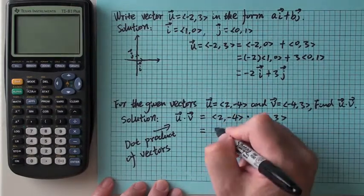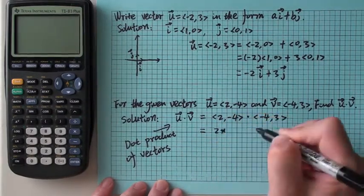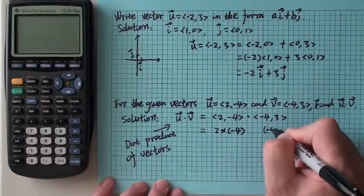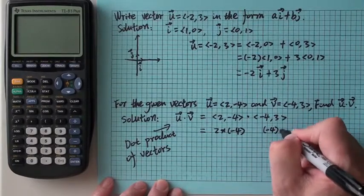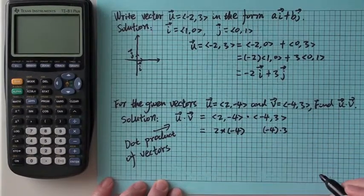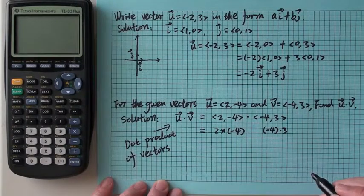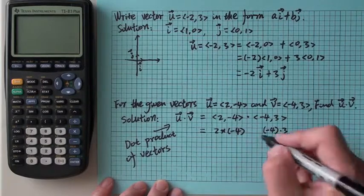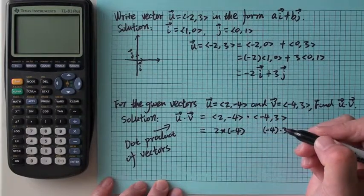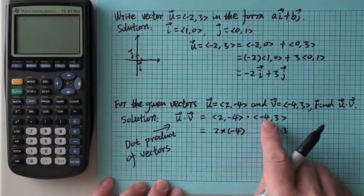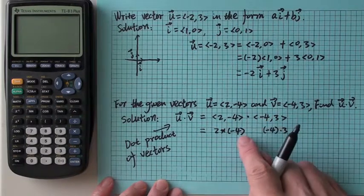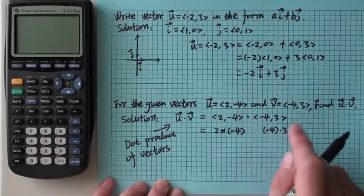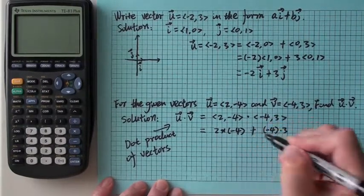It's defined in this way: 2 times -4 and -4 times 3. For the dot product, first component times the first component, second component times the second component, then you add.